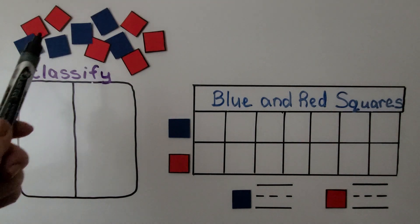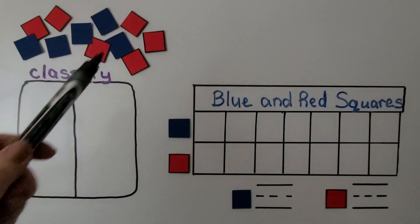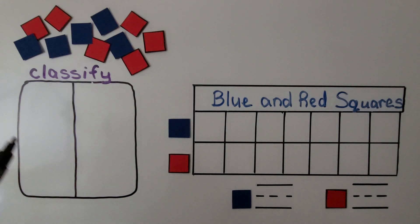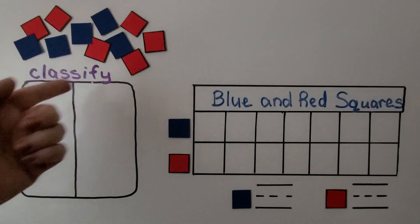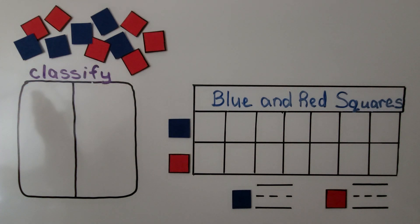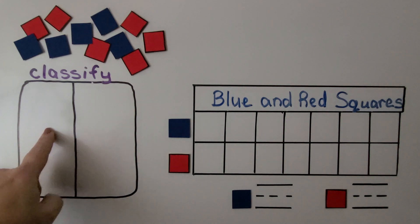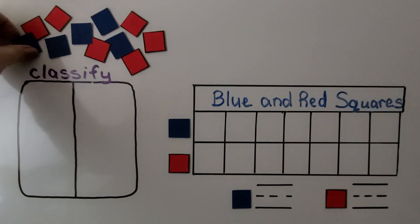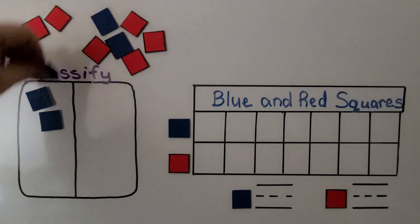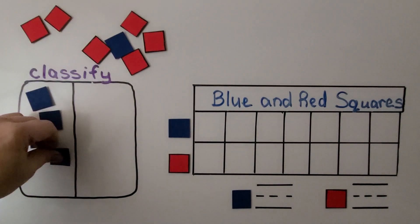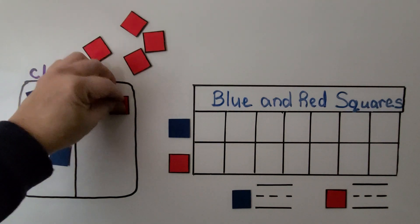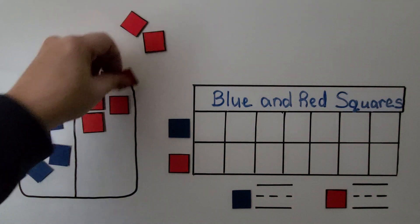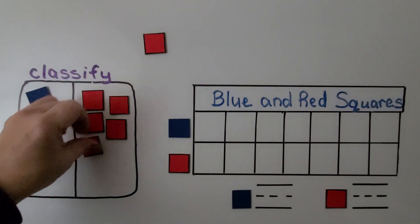Here we have many blue and red squares, and we can sort and classify them. They're the same size — they're all squares. So we can sort them by color into two categories: blue and red. We can put all the blue squares on this side and all the red squares on this side. We have sorted them into two categories of blue and red.